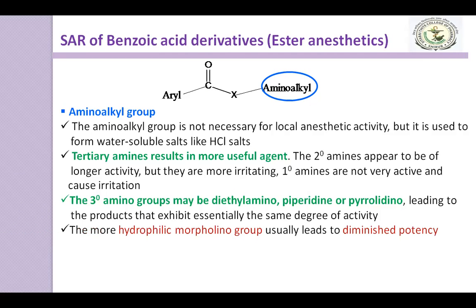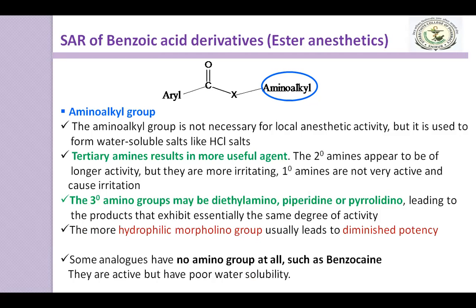The more hydrophilic morpholino group usually leads to diminished potency. Some analogs have no amino group at all, such as benzocaine, and they are active but have poor water solubility. The structure of benzocaine does not contain an aminoalkyl group; even though it is active, it has a poor water solubility problem.